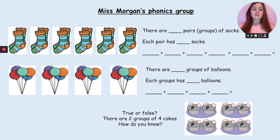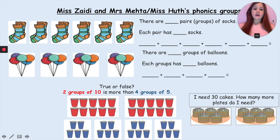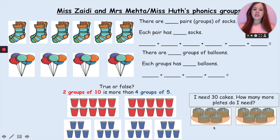If you are in my phonics group, do the same activity — pairs of socks and groups of balloons — and then you have a tricky question: true or false, there are two groups of four cakes — is this showing two groups of four cakes and how do you know you are right? If you are in Miss Zadie, Mrs Metter or Miss Huth's phonics group, fill in the number sentences, and then: I need thirty cakes — how many more plates do I need? You have two groups with five cakes — how many more do you need? And true or false: two groups of ten is more than four groups of five.